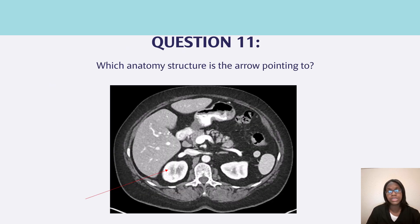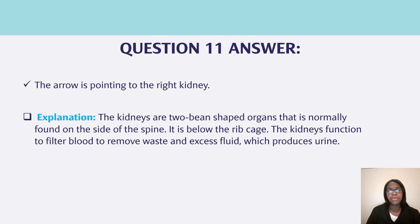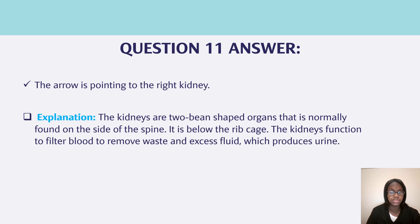Question eleven, which anatomy structure is the arrow pointing to? The arrow is pointing to the right kidney. Make sure you know whether it's pointing to the right kidney or the left kidney. The kidneys are two bean-shaped organs normally found on the side of the spine, below the rib cage. The kidneys function to filter blood, remove waste and excess fluid, which produces urine.